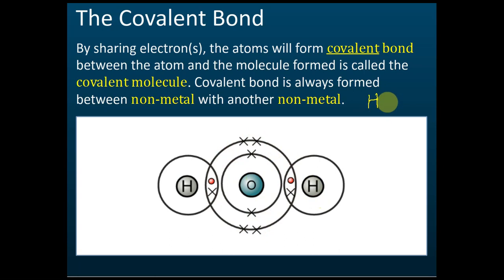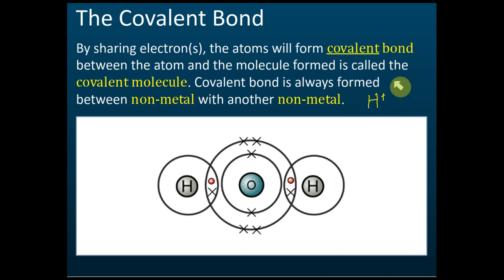Hydrogen carries a positive charge but it's a non-metal — this is an exceptional case. As mentioned when learning the periodic table, hydrogen is exceptional: it does not belong to any group. So other than metals and hydrogen, elements that are positive are also exceptional cases.